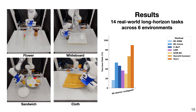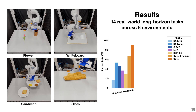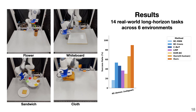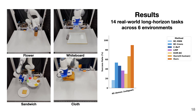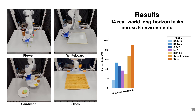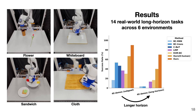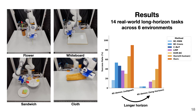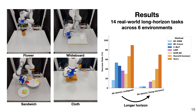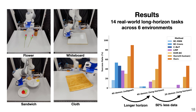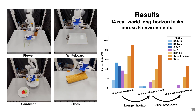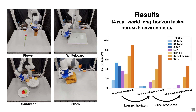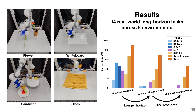We evaluate our approach with 14 real-world long horizon tasks across six environments. We found MimicPlay achieved the best sample efficiency in short horizon setups. When we start testing on longer horizon tasks, the advantage becomes larger. And when we decrease the training data by half to only 20 minutes, MimicPlay is still able to retain above 50% success rate.